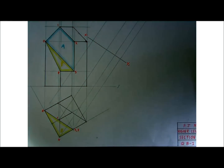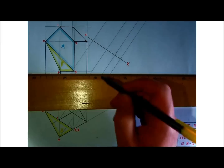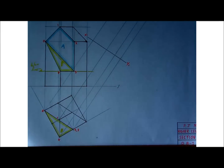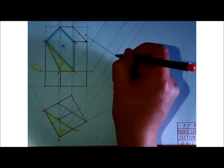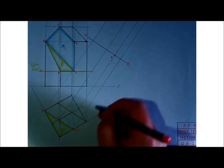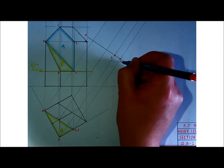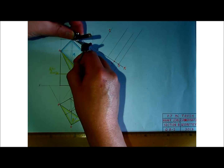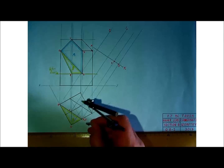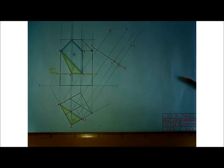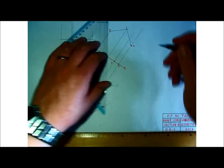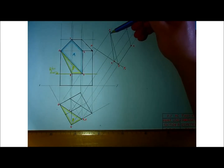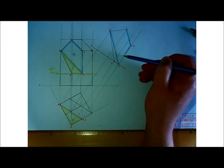I'll put in a datum line to save room. Points four and three are on the XY line, so project up point four — that is point four — and project up point three — that is point three. Use your compass to figure out the heights for the rest of the points.